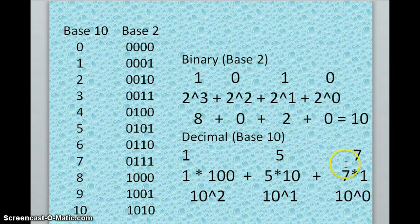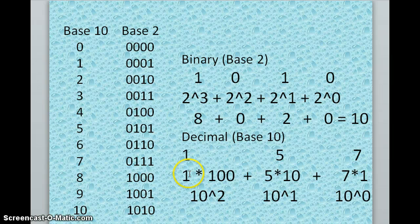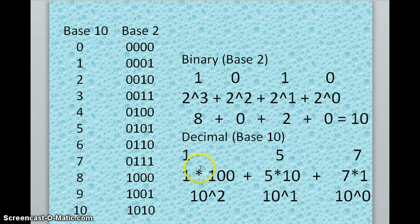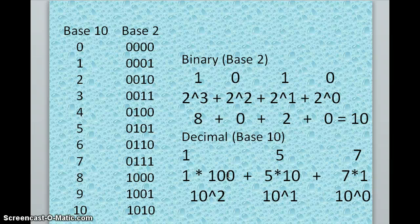So we've got 7 so far plus 50, which is 57. We're pretty close to our number. Now we will go to the power of 2, the twos place, and we'll say 10 to the 2 is what power, or what is what? And it's a hundred.